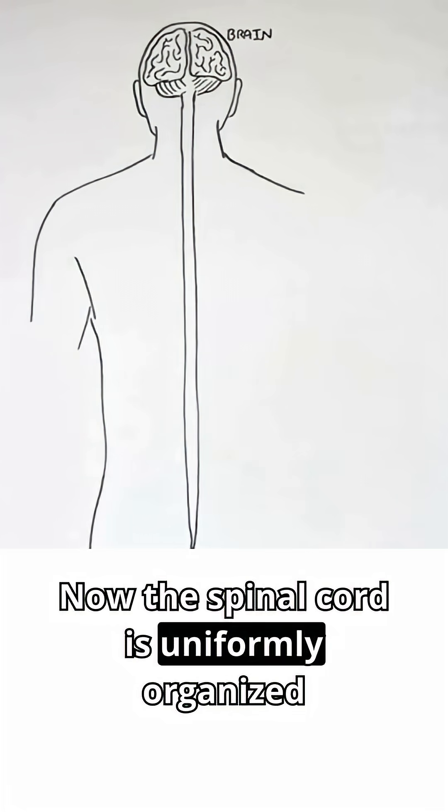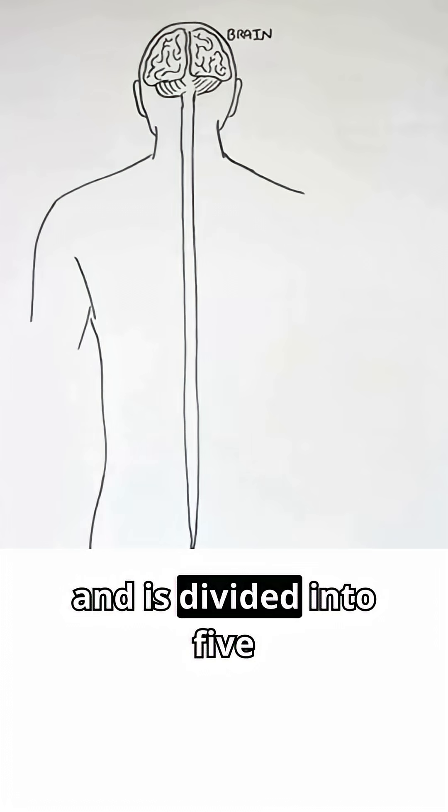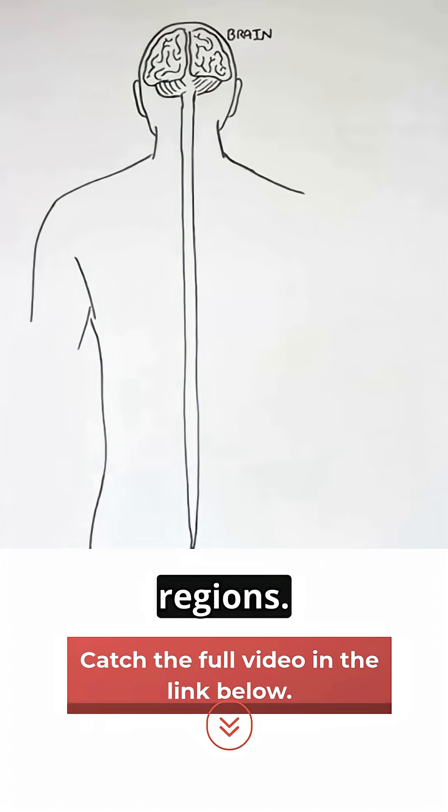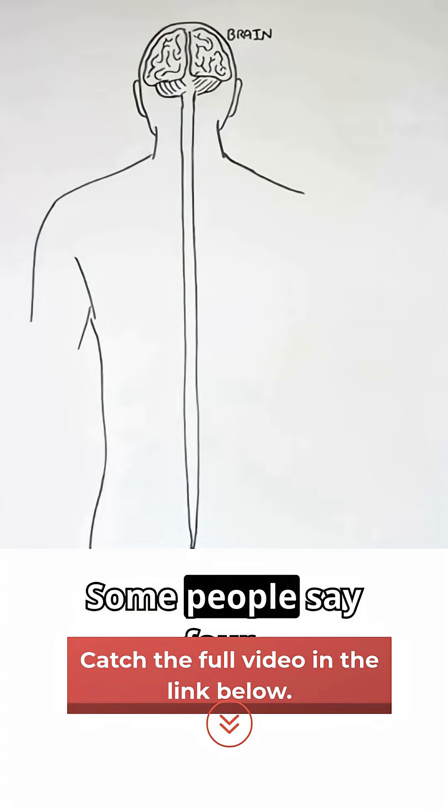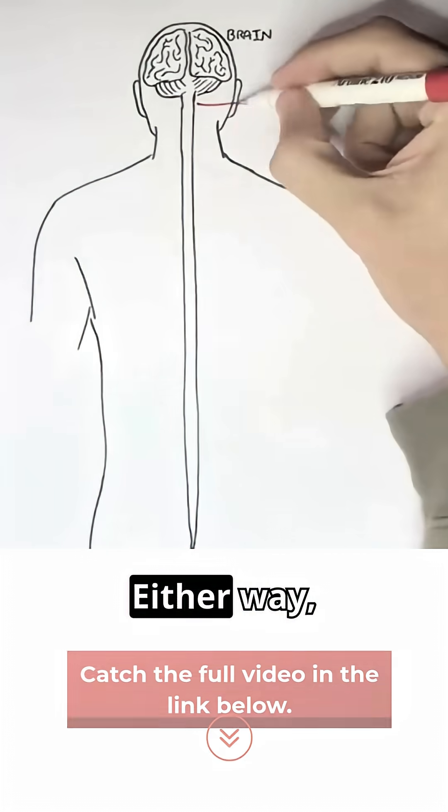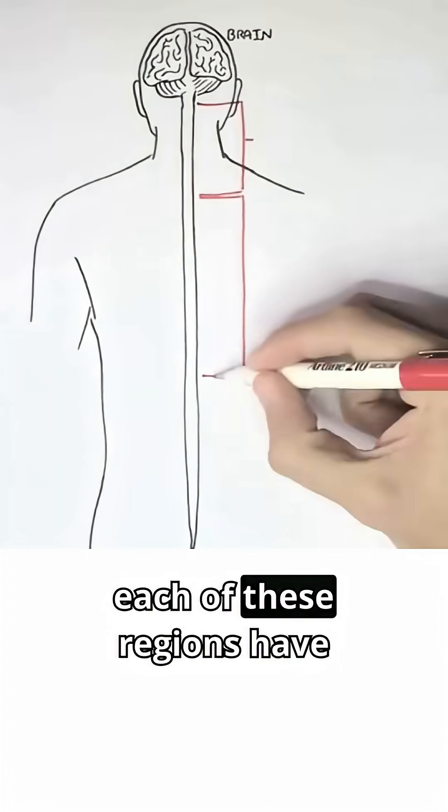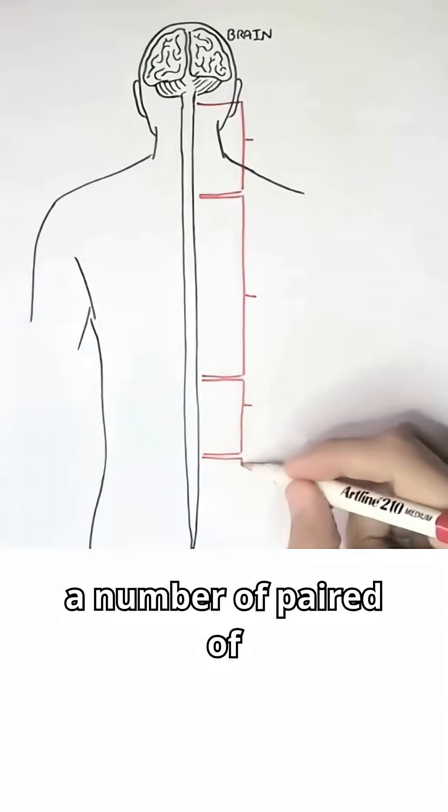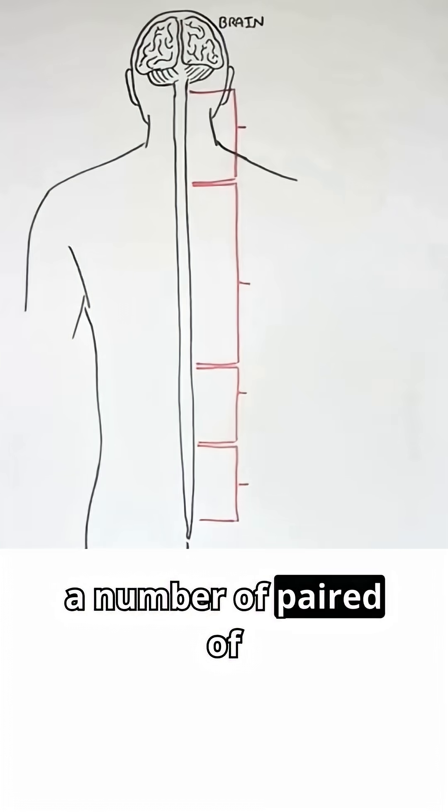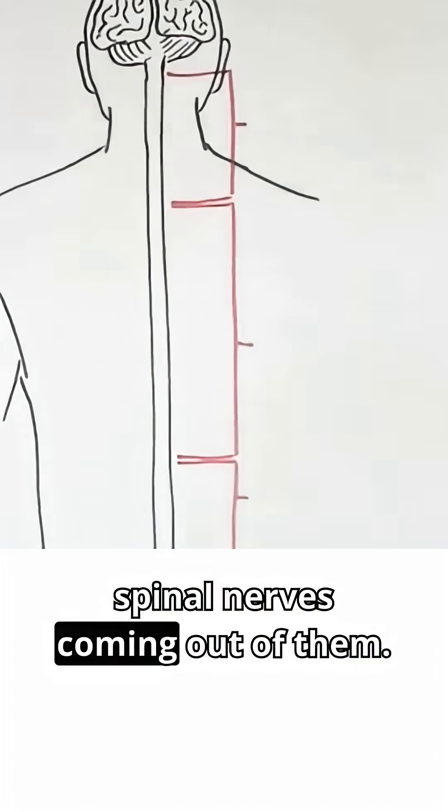Now the spinal cord is uniformly organized and is divided into five regions. Some people say four. Either way, each of these regions have a number of paired spinal nerves coming out of them.